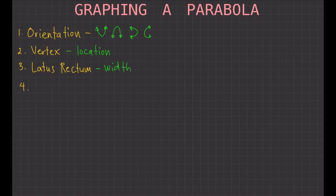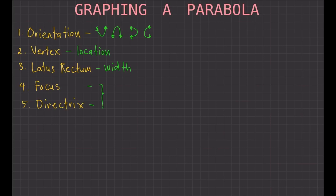The fourth and fifth parts are the focus and the equation of the directrix. These two things came from the definition of the parabola, so we need to include them in our graph.